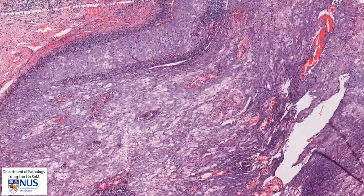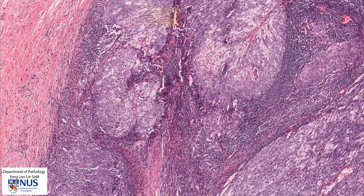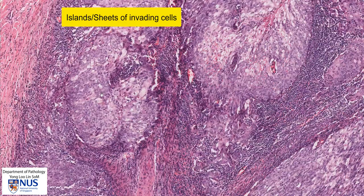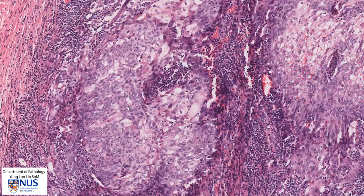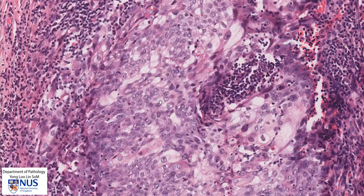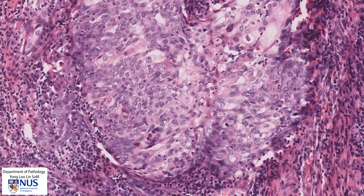Looking at the cells that are invading into the stroma, we can see that they form these very large islands of abnormal cells, and the cells have large nuclei. Some of them have fairly low NC ratios. Many of the nuclei have prominent nucleoli, as you can see here. We don't see any definite keratin pearl formation, so this is a non-keratinizing squamous cell carcinoma.